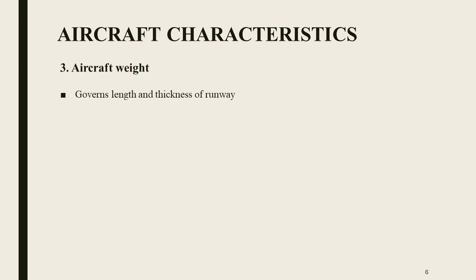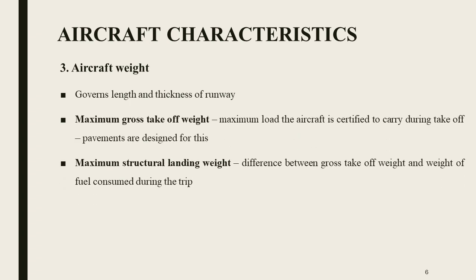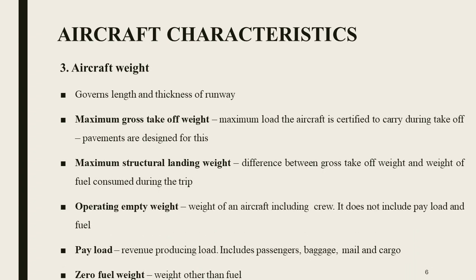Next, weight of aircraft — it governs the length and thickness of the runway. Maximum gross takeoff weight means the maximum load the aircraft is certified to carry during takeoff, and pavements are designed for this. Maximum structural landing weight is the difference between gross takeoff weight and weight of fuel consumed during the trip. Operating empty weight is the weight of the aircraft including crew, but does not include payload and fuel load. Next, payload — the revenue-producing load which includes passengers, baggage, mail and cargo. Zero fuel weight is the weight other than fuel.